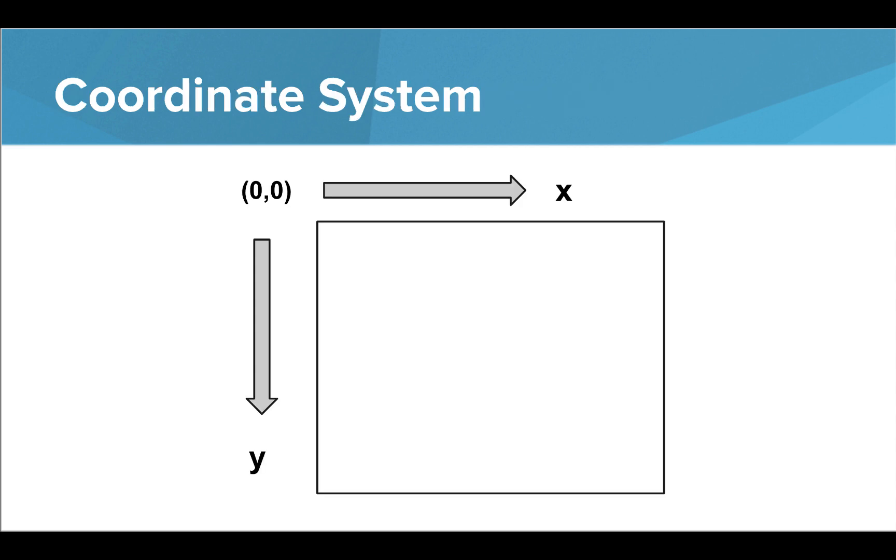Before we begin writing programs, let's take a look at the coordinate system we'll be using with Python graphics. As you can see, the zero zero point is located in the top left hand corner. The x values increase as we move right and the y values increase as we move down.